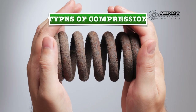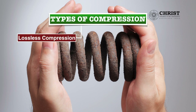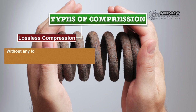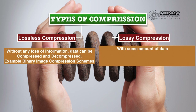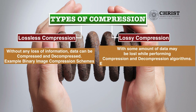The next topic is types of compression. There are two types: one is lossless compression, where data can be compressed and decompressed without any loss of information — for example, binary image compression schemes. The second is lossy compression, where some amount of data may be lost while performing compression and decompression algorithms — for example, still images and video compression schemes.